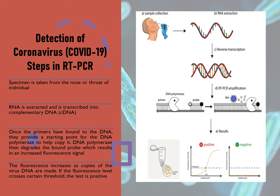Here are the steps in RT-PCR to detect coronavirus. Firstly, the specimen is taken from the nose or throat of an individual. Then, the RNA from the specimen is extracted and transcribed into complementary DNA. Once the primers have bound to the DNA, they provide a starting point for the DNA polymerase to help copy it. DNA polymerase then degrades the bound probe, which results in an increased fluorescence signal. The fluorescence increases as copies of the viral DNA are made. If the fluorescence crosses a certain threshold, the test is positive.